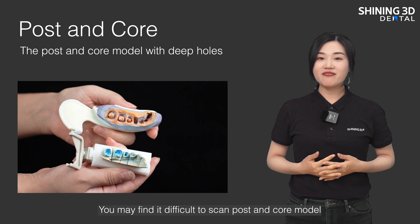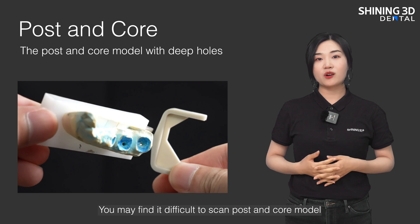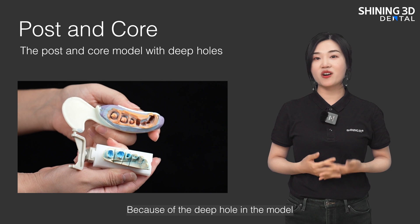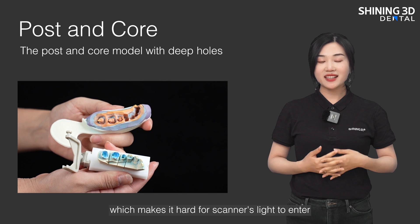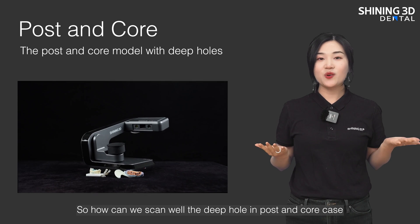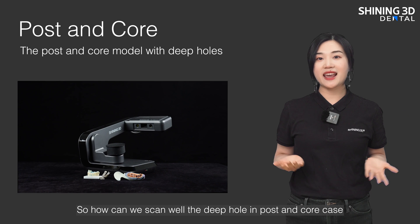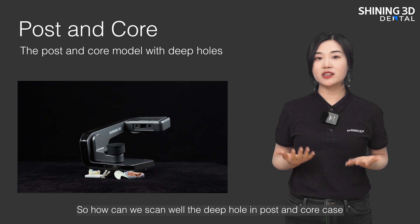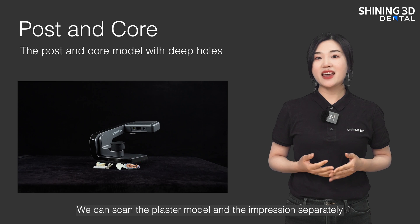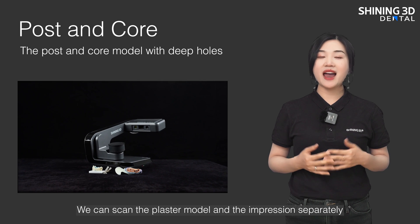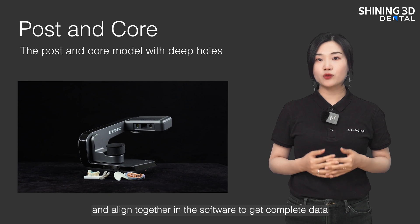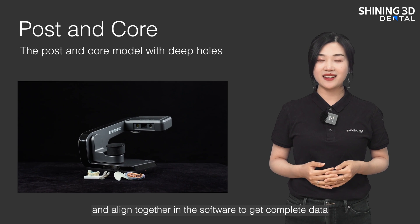You may find it very difficult to scan a post and core model. Why? Because of the deep hole in the model, which makes it hard for the scanner light to enter. So how can we scan the deep hole in a post and core case? Very easy — we can scan the plaster model and the impression separately and align them together in the software to get complete data.